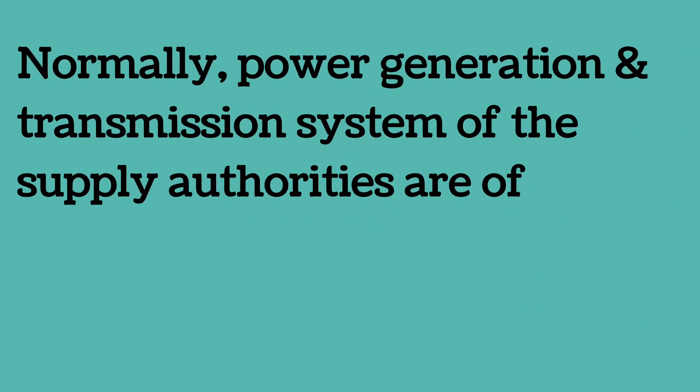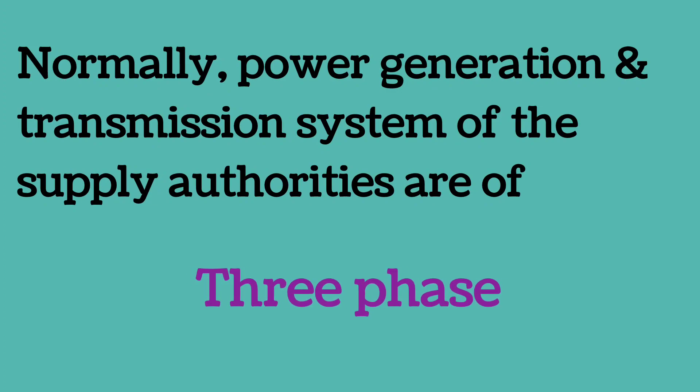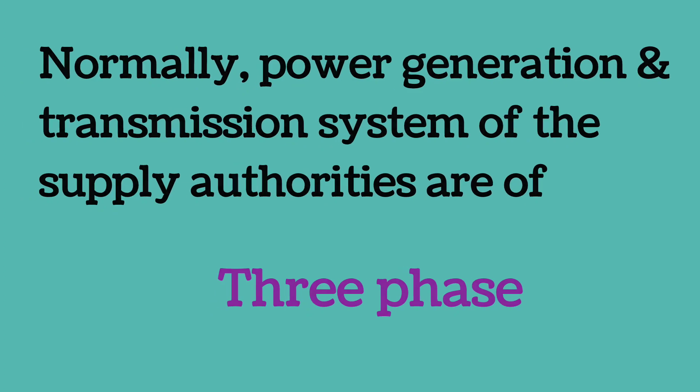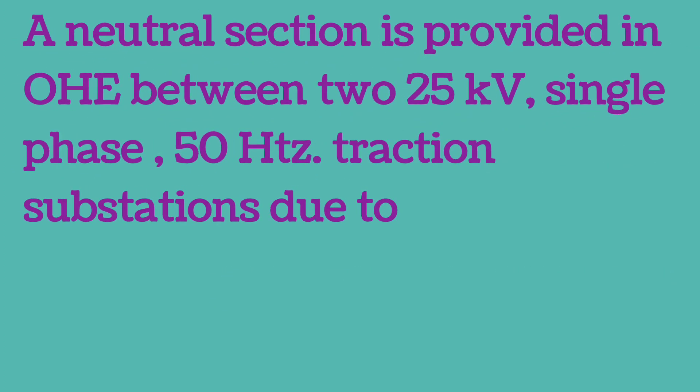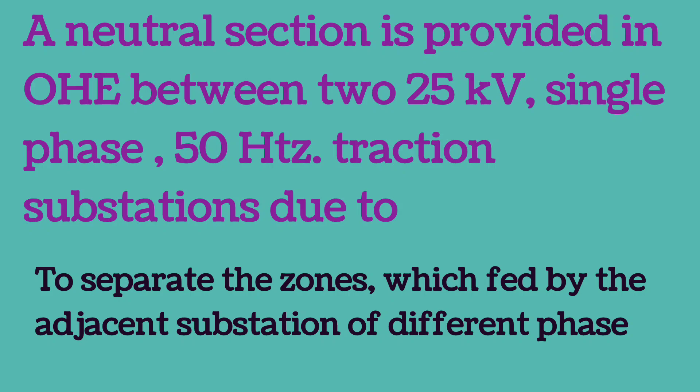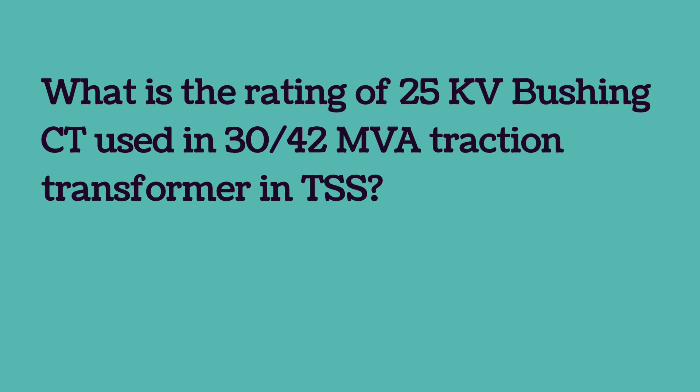Normally, the power generation and transmission system of the supply authorities are of 3 phase. A neutral section is provided in the OHE between two 25 kV single phase 50 Hz traction substations in order to separate the zones which are fed by adjacent substations of different phase.